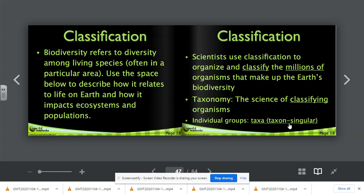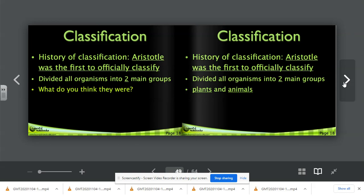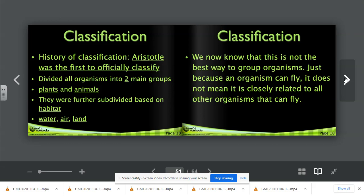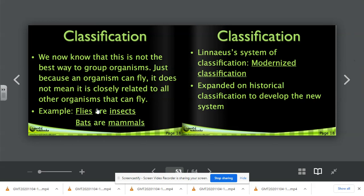So the history of classification. Aristotle was the first to officially classify. He divided all organisms into two main groups. What do you think they were? Plants and animals. If you said plants and animals, you were correct. They were further subdivided based on their habitat, whether they lived in the water, in the air or on land. We now know that this is not the best way to group organisms. Just because an organism can fly, it does not mean it is closely related to all other organisms that can fly. Think of a dragonfly and an eagle. They don't really have all that much in common. They're more dissimilar than they are similar. Flies are insects. This is another example. Bats are mammals. Think of the example of a fly versus a bat.